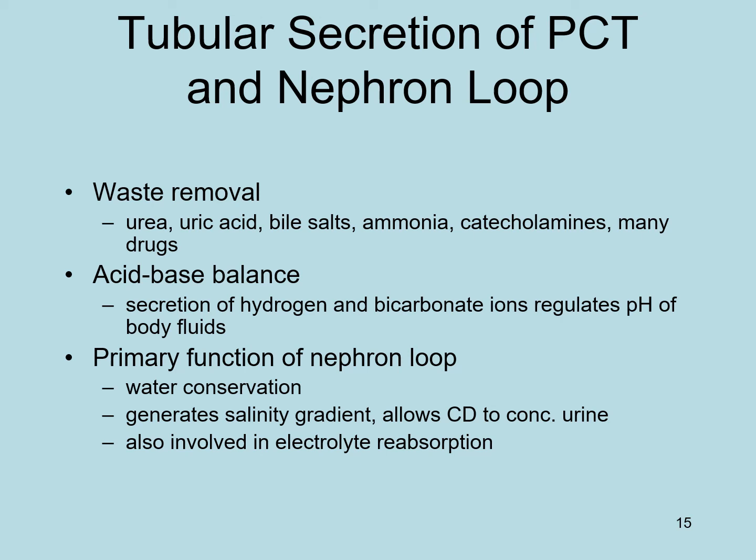Tubular secretion in the proximal convoluted tubule involves the removal of waste products including urea, uric acid, bile salts, ammonia, catecholamines, and some drugs. The kidney is one route for secretion and loss of waste products. Regarding acid-base balance: the proximal tubule secretes hydrogen ions and bicarbonate to regulate the pH of body fluids.